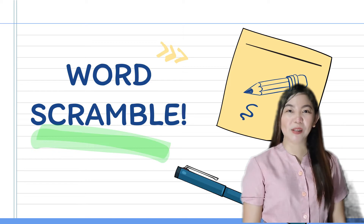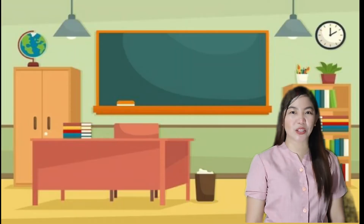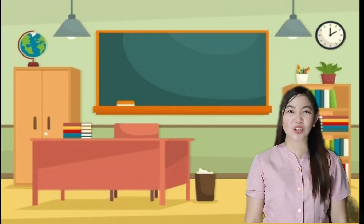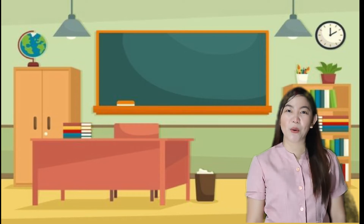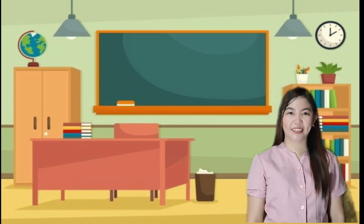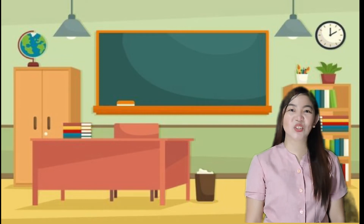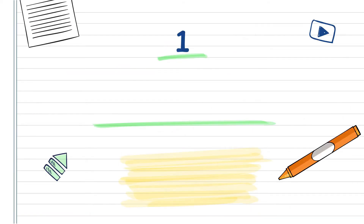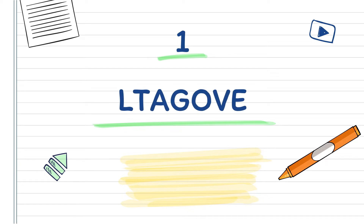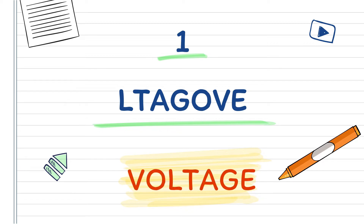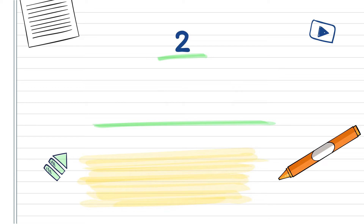Study the scrambled letters and try to unscramble or rearrange the letters to form a word. Are you ready, class? Okay! Let's do it! Let's have the first scrambled letters. What is the word from the scrambled letters? You're right! It's voltage.